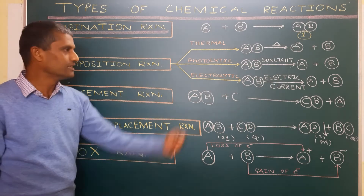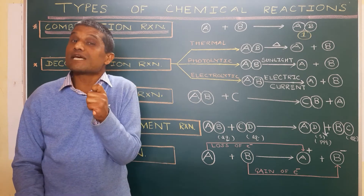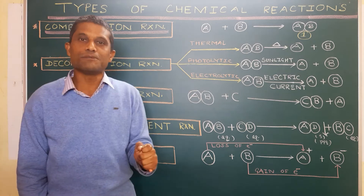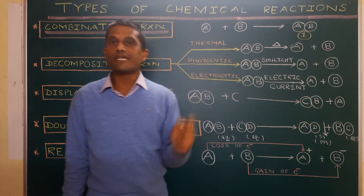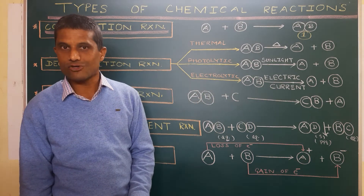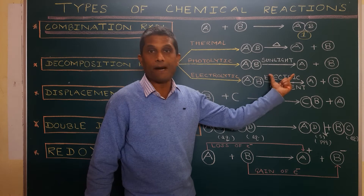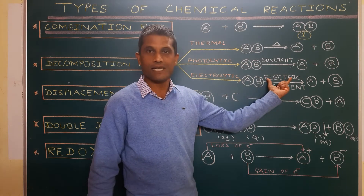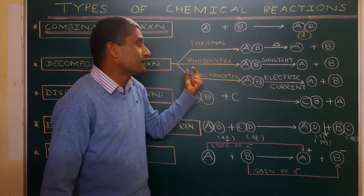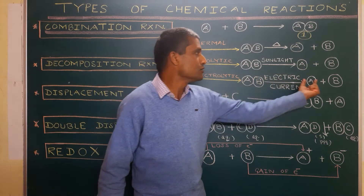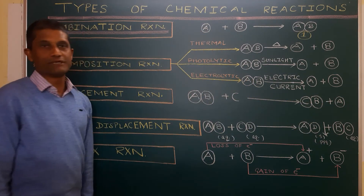Photolytic decomposition — 'photo' means light. A kind of decomposition in which a single substance breaks up under the action of sunlight to give two or more simpler substances is called photolytic decomposition. Third is electrolytic decomposition, also known as electrolysis. A single substance breaks up under the action of electric current to give two or more simpler substances. For example, substance AB breaks up under electric current to give A and B.